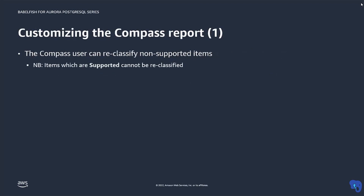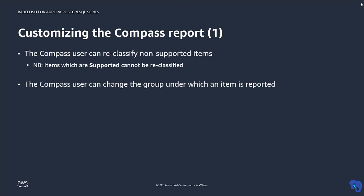Compass classifies all SQL features as supported by Babelfish, not supported, requiring review, or as ignored. As a Compass user, you can overwrite these default classifications with your own, but you can only do this for items that are not supported by Babelfish. In addition, you can modify the group header under which an item shows up in the Compass report.